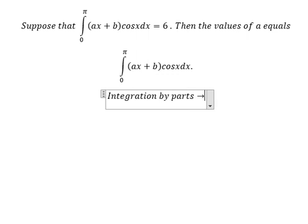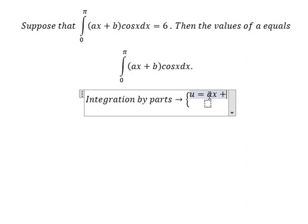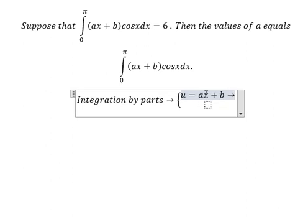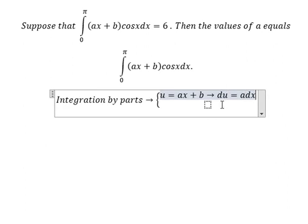We have u equals ax plus b. If we take the first derivative for both sides, we get du equals adx. dv equals cosxdx, so if we integrate we get v equals sinx.